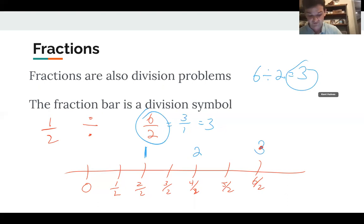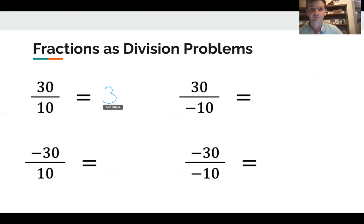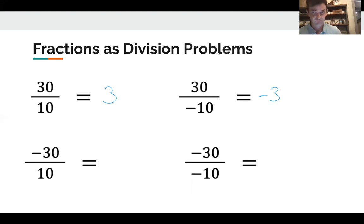Anytime we see a fraction, it's also a division problem — if you can do the division, do it. Now let's look at some fractions with negatives. 30 over 10 is the same as 30 divided by 10, which equals 3. 30 over negative 10 — one negative sign means the result is negative, so the answer is negative 3. Negative 30 over 10 — same logic, negative 30 divided by 10 gives negative 3. And negative 30 over negative 10 — the negatives cancel, giving us positive 3.